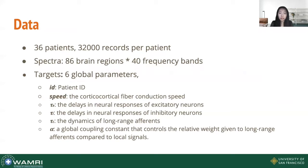The data consists of 36 adult subjects, each with about 32,000 spectra. Each spectrum has a shape of 86 by 40, which stands for 86 brain regions and 40 frequency bands. For a MEG spectrum, we want to find a set of parameters that could describe the spectrum.